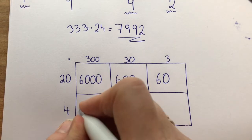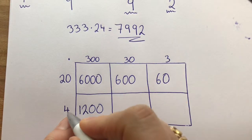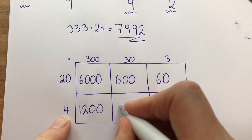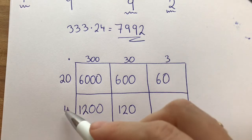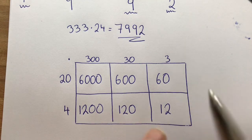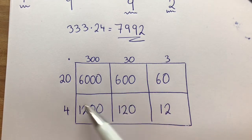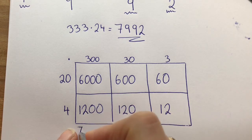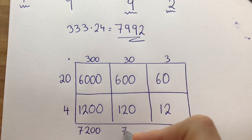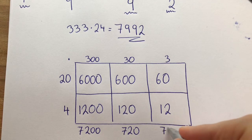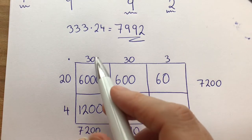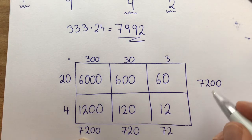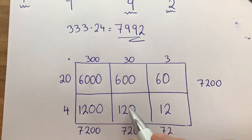Now we carry on. 3 times 4 is 12, with 2 zeros left over, so 4 times 300 is 1,200. 3 times 4 is 12 with 1 zero left over, so 30 times 4 is 120. And then the last one, 3 times 4 is 12. So now we have all of these different products and we can add the sum of them. 6,000 plus 1,200 is 7,200, and that is the sum of 300 times 20 plus 300 times 4.